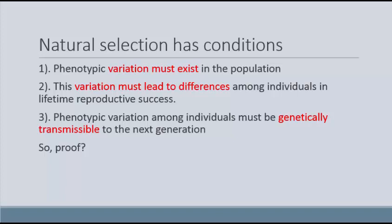Individuals with the best phenotypic variations will have the most kids. And finally, phenotypic variation among individuals must be genetically transmissible. If you have a particularly fantastic phenotypic variation but it's not in your genes, it's not going to make a difference because it won't be passed on to the next generation.